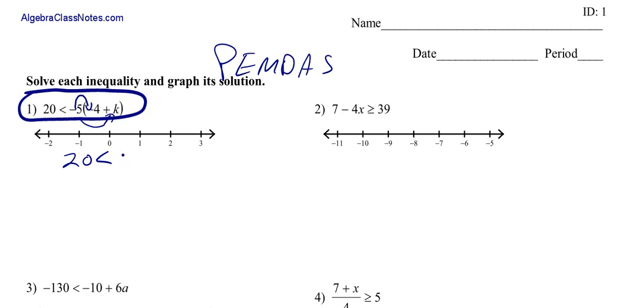Negative times a negative is positive, so that would be positive 20. A negative times a positive is negative, so let's write down our negative sign. There's an understood or imaginary one here, so 1 times 5 is 5, giving us negative 5k.